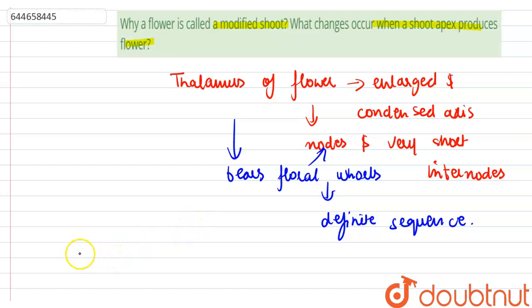apex produces flower are: changes—the internodes do not elongate.